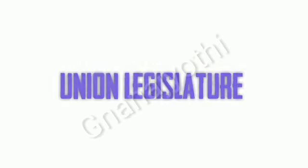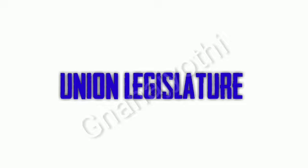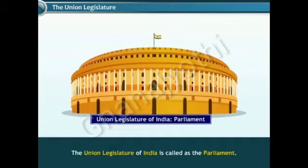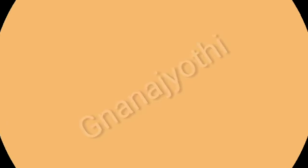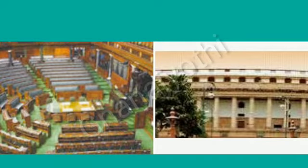Now let us view the union legislature. India has adopted the parliamentary system of government and the union legislature is called the Parliament. Article 79 provides for the creation of Parliament. The Parliament consists of two houses: the upper house is called Rajya Sabha and the lower house is called Lok Sabha.